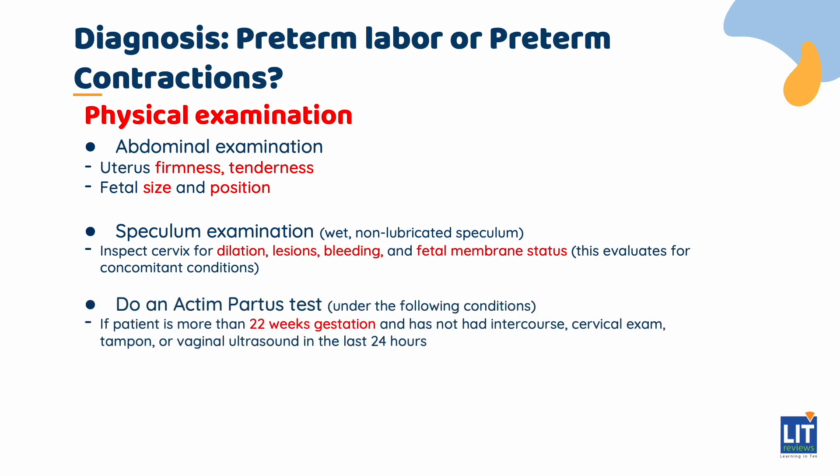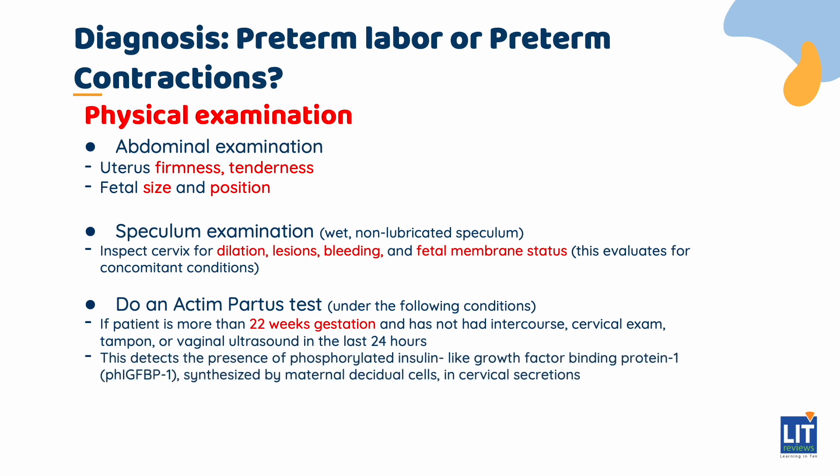If the patient is at more than 22 weeks gestation and has not had intercourse, a cervical exam, tampon, or vaginal ultrasound in the last 24 hours, you would perform an actin partus test. This detects the presence of phosphorylated insulin-like growth factor binding protein 1, synthesised by maternal decidual cells in cervical secretions. If vaginal infection is suspected, a wet prep as well as cervical and urine cultures can be conducted.